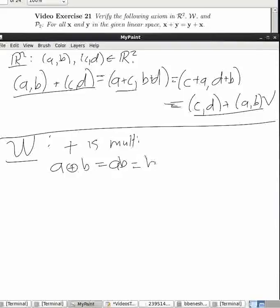But A times B—multiplication commutes—so I can do that, and then by definition of the weird addition in W, you get that. Done.